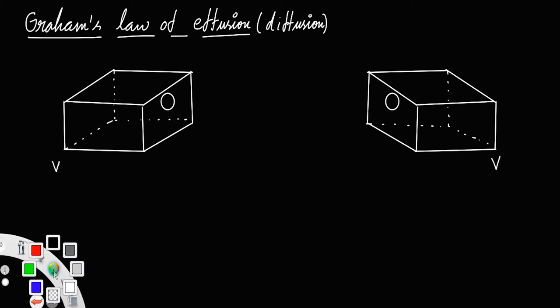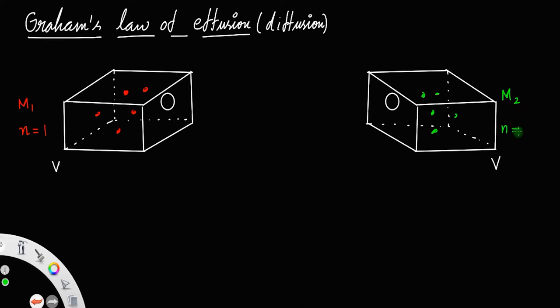Let the first box be filled with a molecule of molecular mass m1, and we have taken number of moles of the first gas as 1. Similarly, in the second box, let it be filled with a gas of molecular mass m2, here also let the number of moles be equal to 1. Let the pressure on both boxes be the same equal to p, and let both the boxes be heated to temperature t. Let the average velocity of a gas molecule in the first box be v1 bar and that of the molecule in the second box be v2 bar.